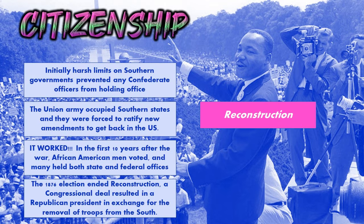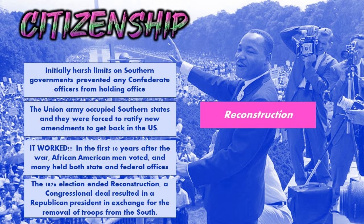Reconstruction was really successful — it worked. The first ten years after the Civil War, after the 15th Amendment, African-American men are voting at incredibly high rates. African-American men are winning offices at the state level and at the national level. All of our first black senators and congressmen are from the 1870s. Mississippi was one of the first states to elect a black person to Congress. This really worked and was an effective policy.